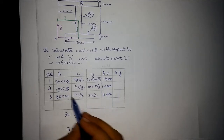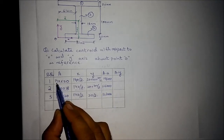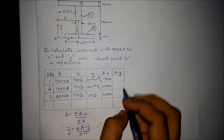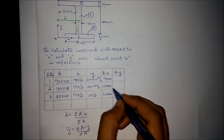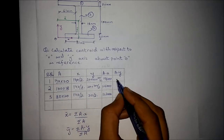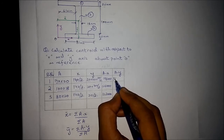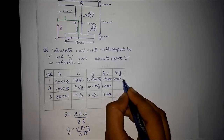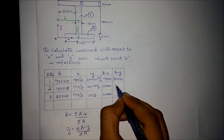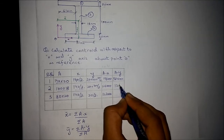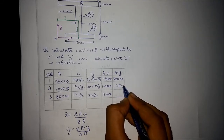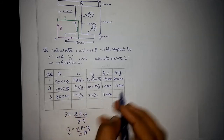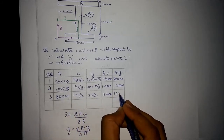For AY we multiply area by the y coordinate for shapes 1, 2, and 3 respectively. For shape 1 the product is 36,400. For shape 2 the product is 36,000. For shape 3 the product is 16,000.